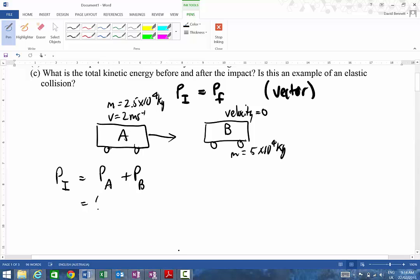So momentum of A is 2.5 by 10 to the 4 times by 2 meters per second. And momentum B is going to be 5 by 10 to the 4 times by 0, so therefore that has no momentum because it's got no velocity. You've got to be moving to have momentum.